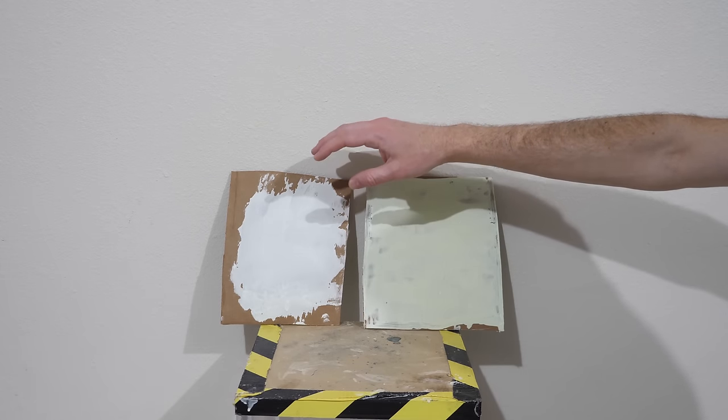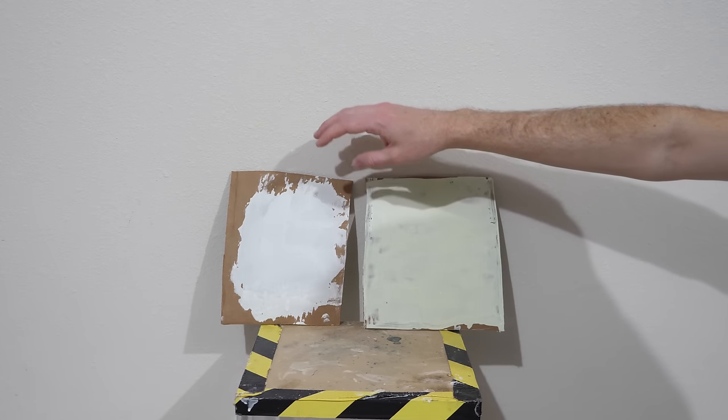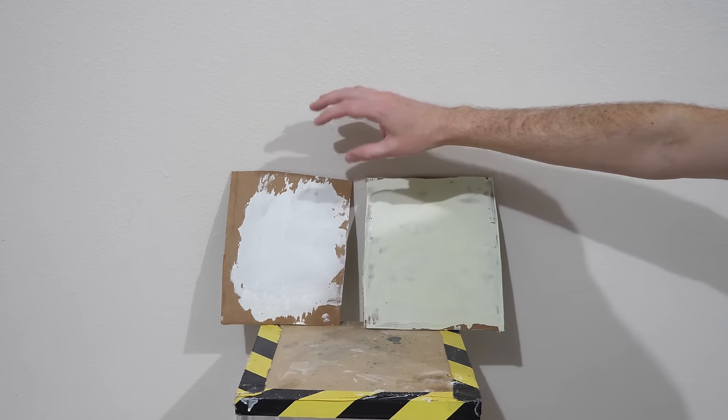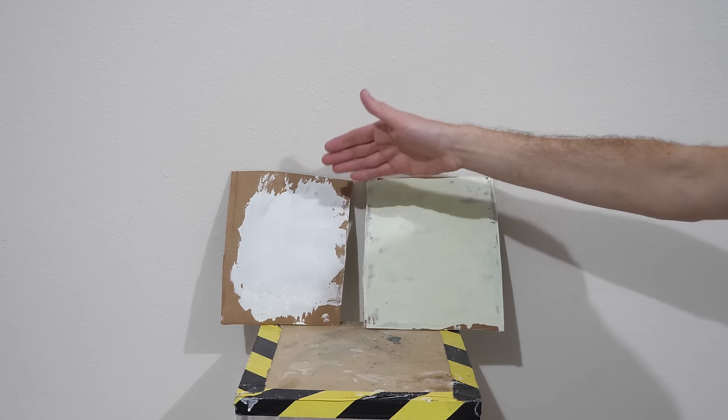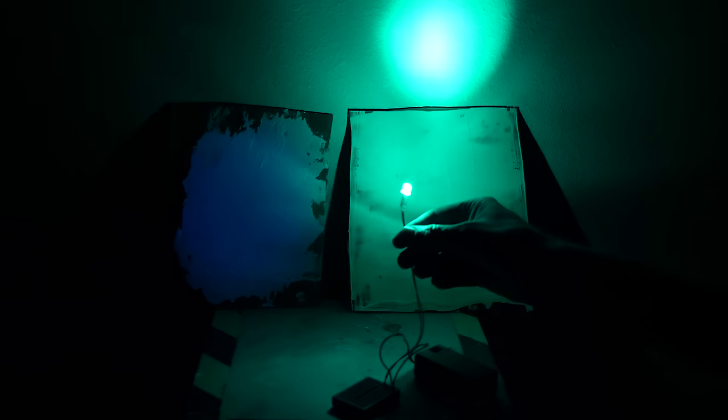So remember that in order to charge a glow-in-the-dark material you have to use light that has a greater frequency than the wavelength of light that the glow-in-the-dark thing emits. For example I have here a green LED light. So notice how this green light cannot charge the lit. I hold it right on there it doesn't charge it. It also cannot charge the blue. You can't see the lines on it at all.